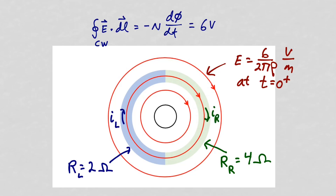At the boundary between the left and right rings at the top, there is more current flowing into the boundary than away from it, so it will start to charge up positively. At the boundary on the bottom, there is more current flowing away from that boundary than into it, so there will be a net buildup of negative charge. This charge buildup will result in additional electric fields emanating from the positive charges at the top boundary and terminating on the negative charges at the bottom boundary.